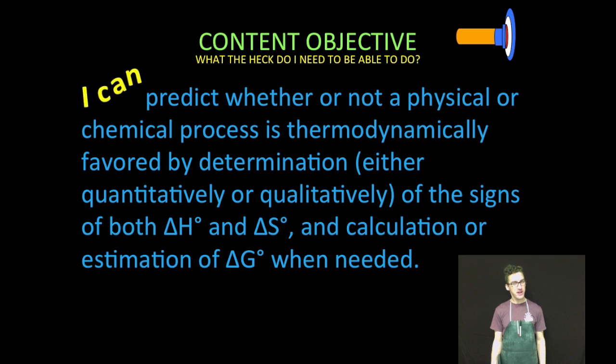We are going to predict whether or not a physical or chemical process is thermodynamically favored by determination, either quantitatively or qualitatively, of the signs of both delta H, delta S, and calculation or estimation of delta G when needed.